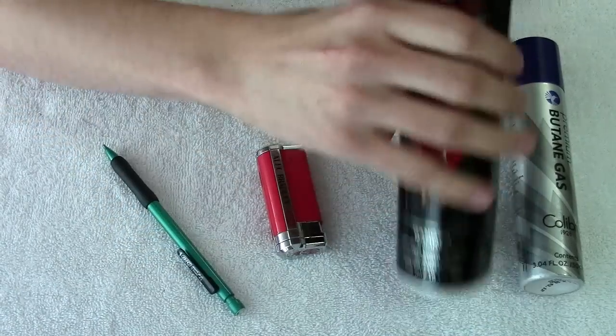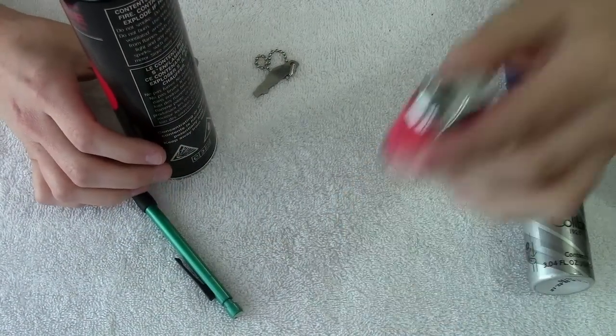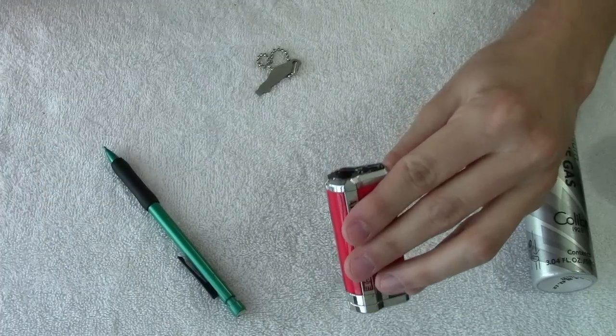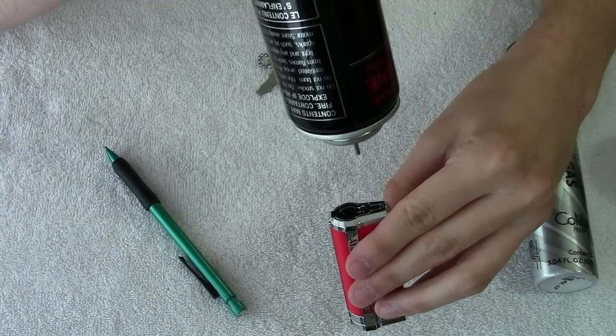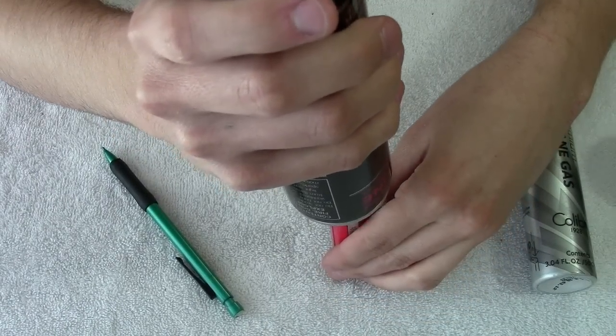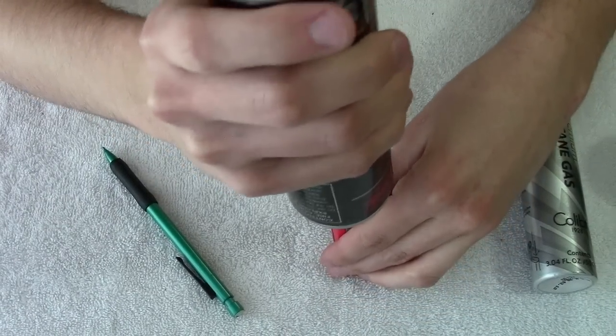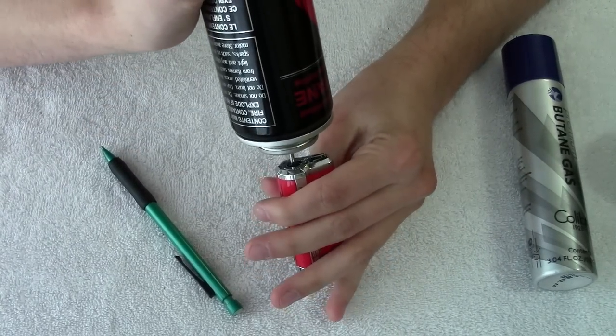So we'll take our fluid here. Put it that same direction. You always want to fill facing down. So I'm going to be pushing the butane gas into the lighter. So I'm going to find my valve here. And when I press down on this, I like to just wiggle it a little bit.